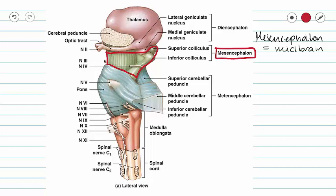Our mesencephalon contains a portion of the cerebral aqueduct, a portion of the reticular formation which we will discuss at the end of this video, and various other tracts including tracts associated with cranial nerve 3 and cranial nerve 4.